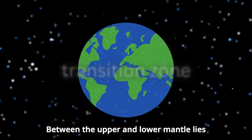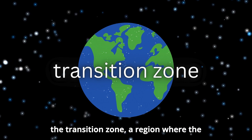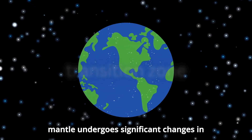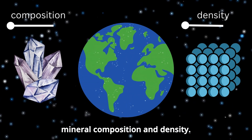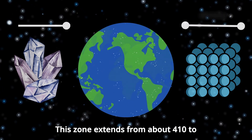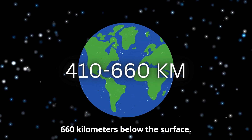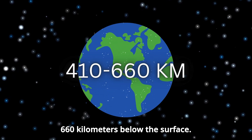Between the upper and lower mantle lies the transition zone, a region where the mantle undergoes significant changes in mineral composition and density. This zone extends from about 410 to 660 kilometers below the surface.